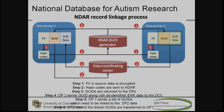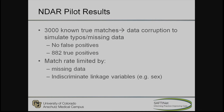One system we examined was the NDAR — the National Database for Autism Research. In our pilot, we took 3,000 known matches using simulated data, corrupted the data similar to how electronic health record data would be corrupted, and used this system to do the matches. We had no false positives, but only 882 true positives. The match rate was really limited by missing data and indiscriminate variables — variables that don't help you much, such as sex.